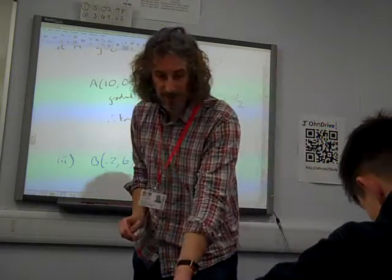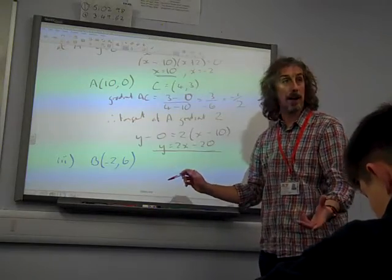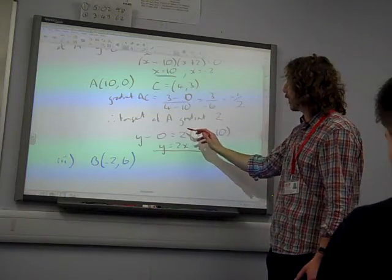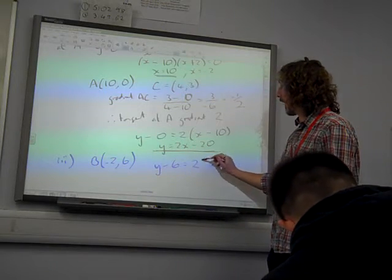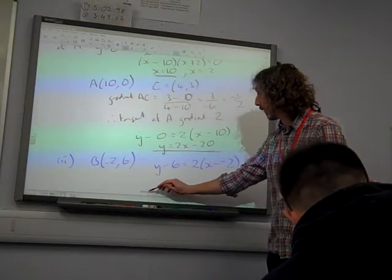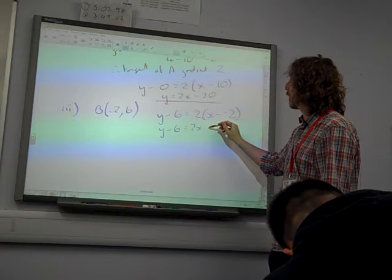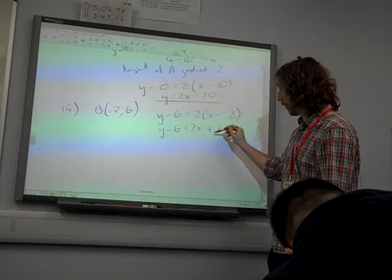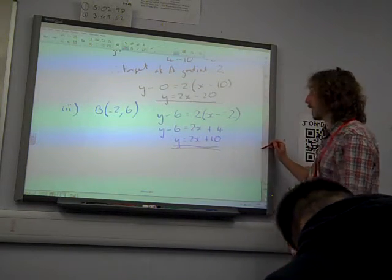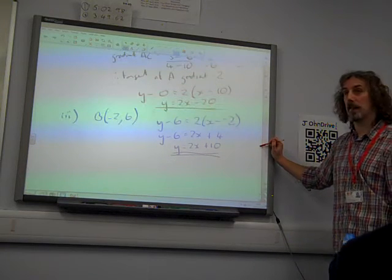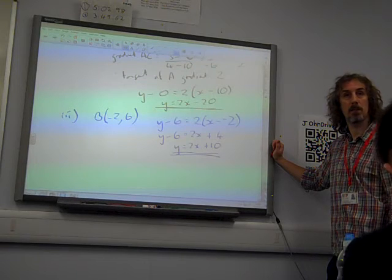You could arrive at that in any number of different ways. And the line has a gradient of 2, because it's parallel to that one. Y minus Y1 is Mx minus x1. Giving us Y minus 6 is 2x plus 4. So, Y equals 2x plus 10. There we go. That's our other line parallel to that one. There we go. Brilliant.